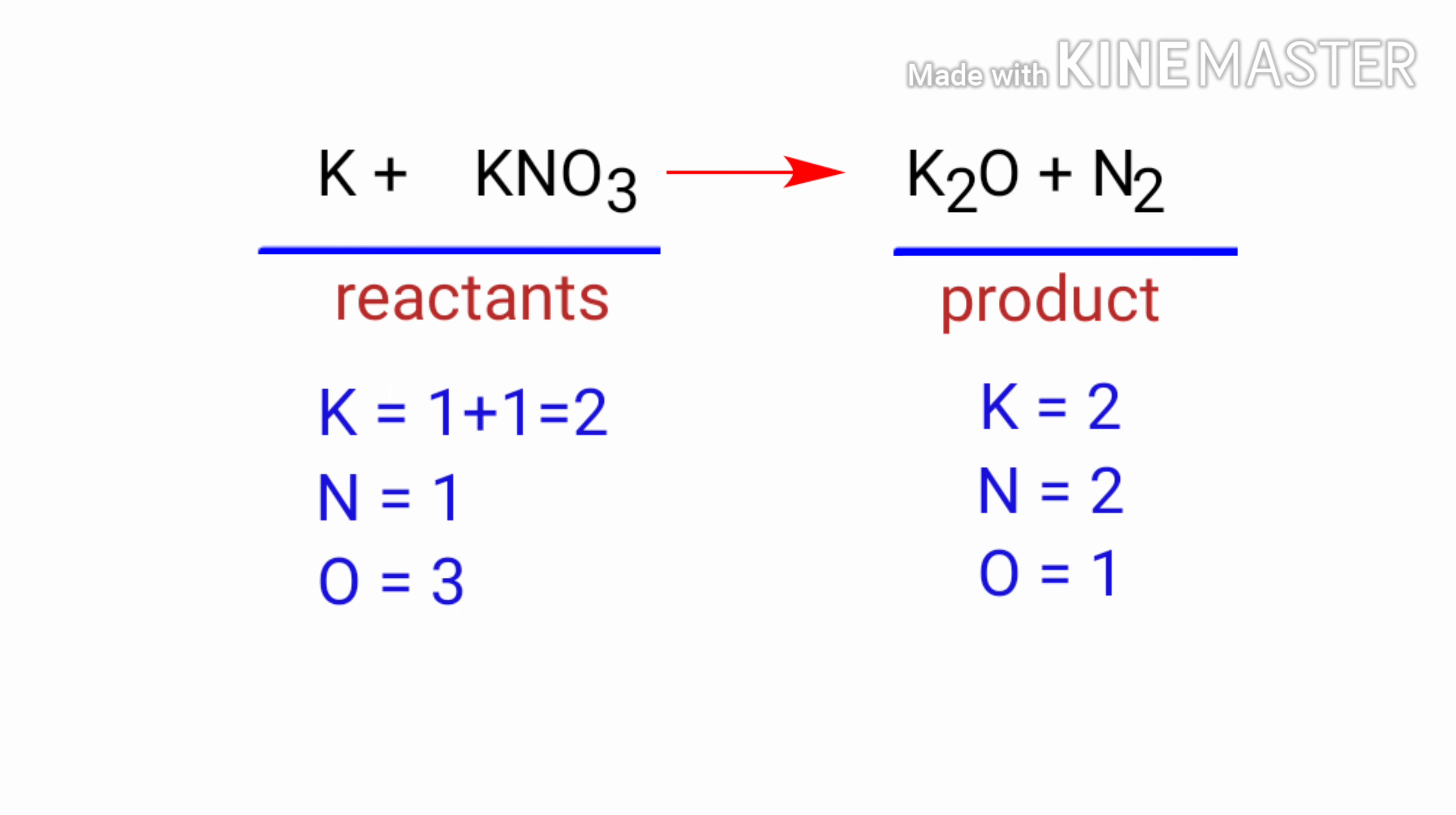To balance the chemical equation, we need to make use of coefficients. A coefficient is a number that we place in front of a chemical formula.